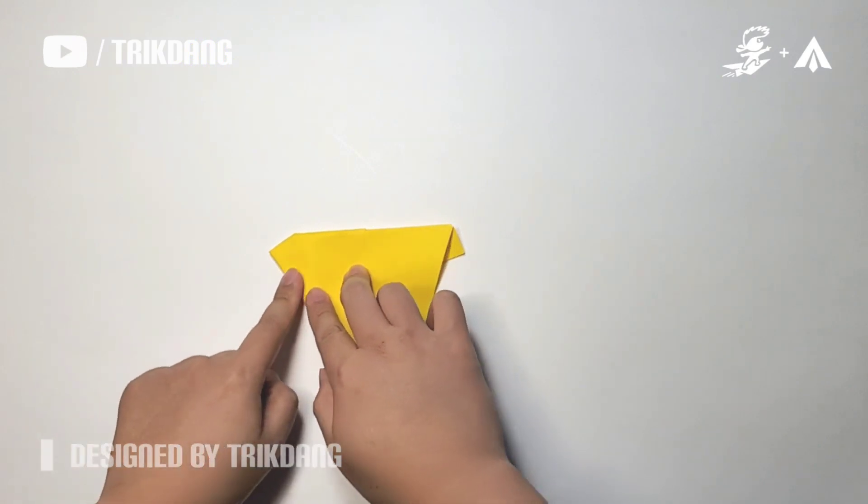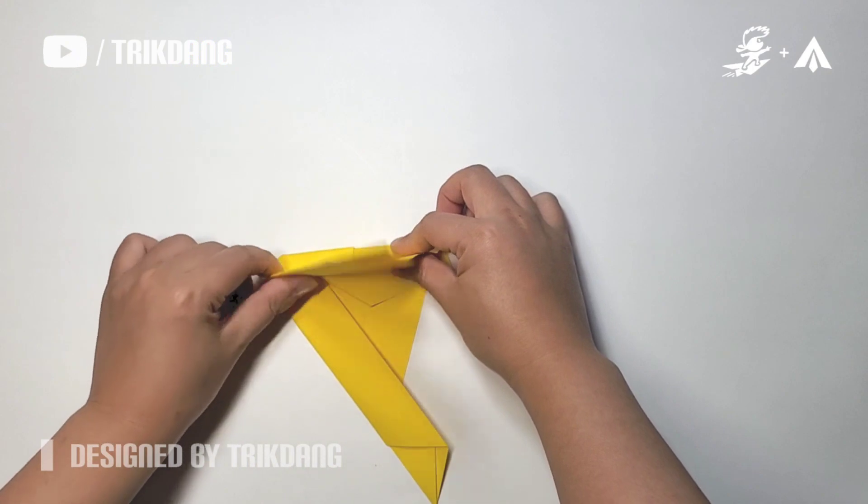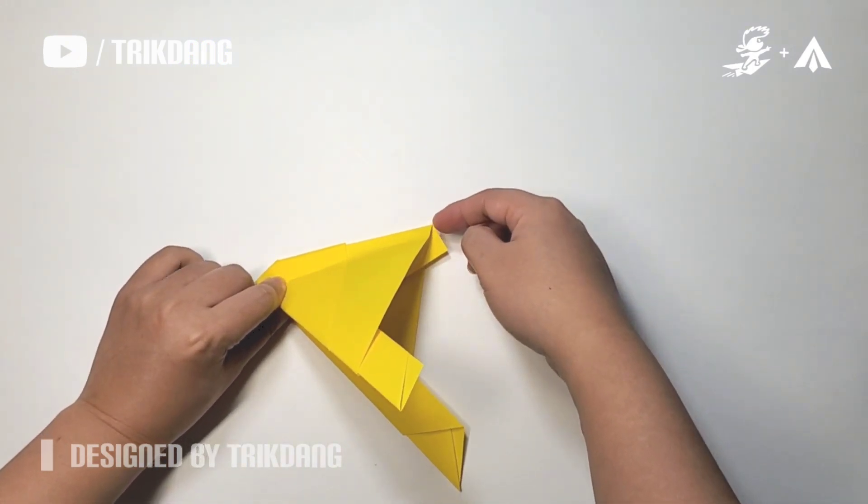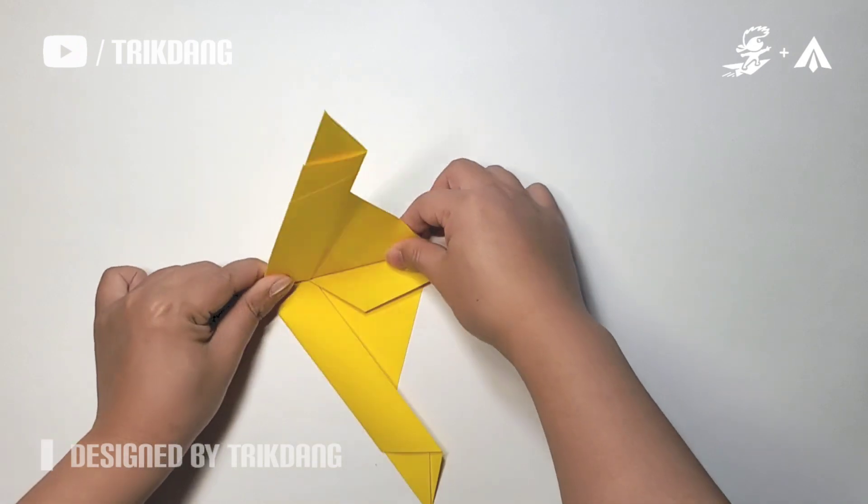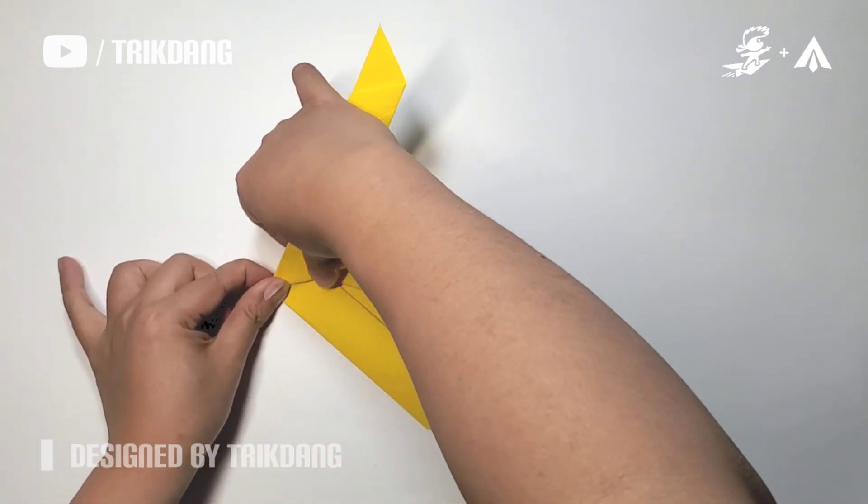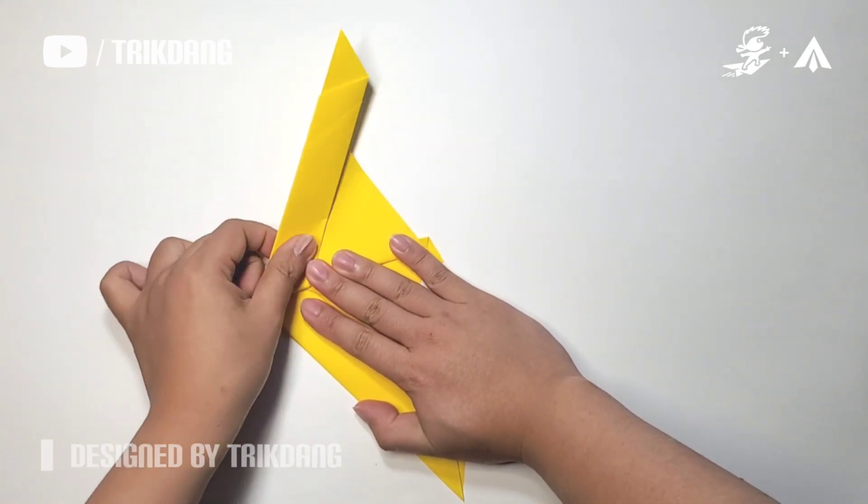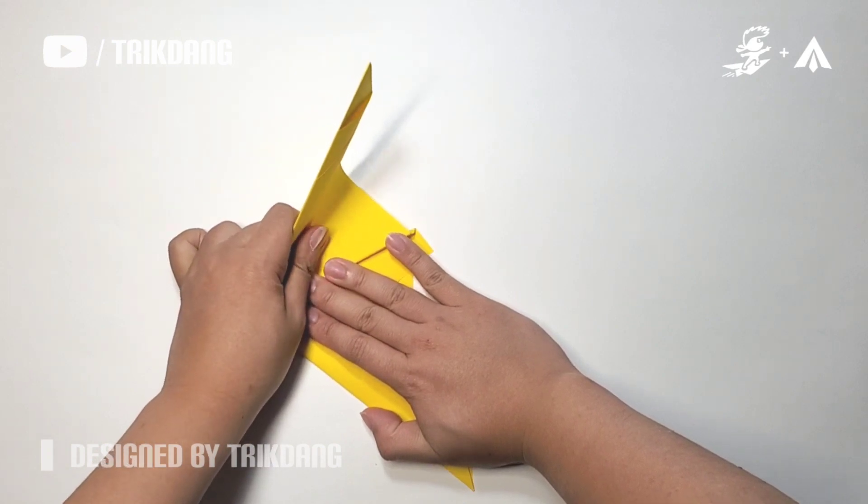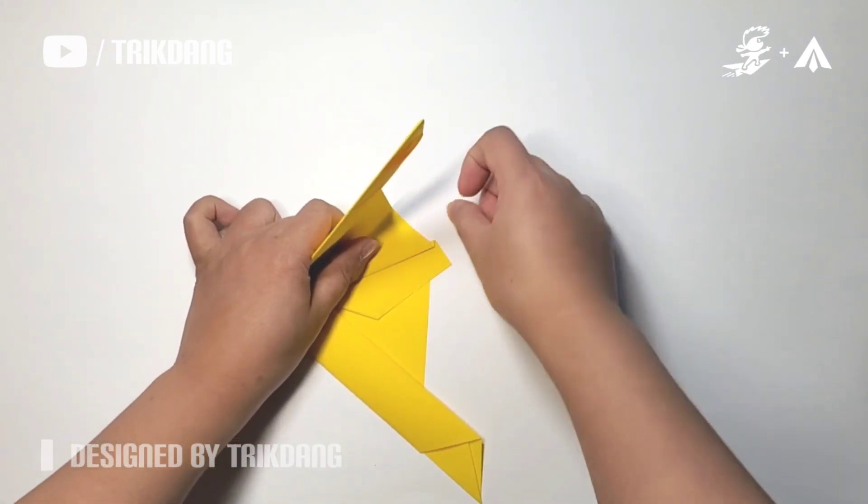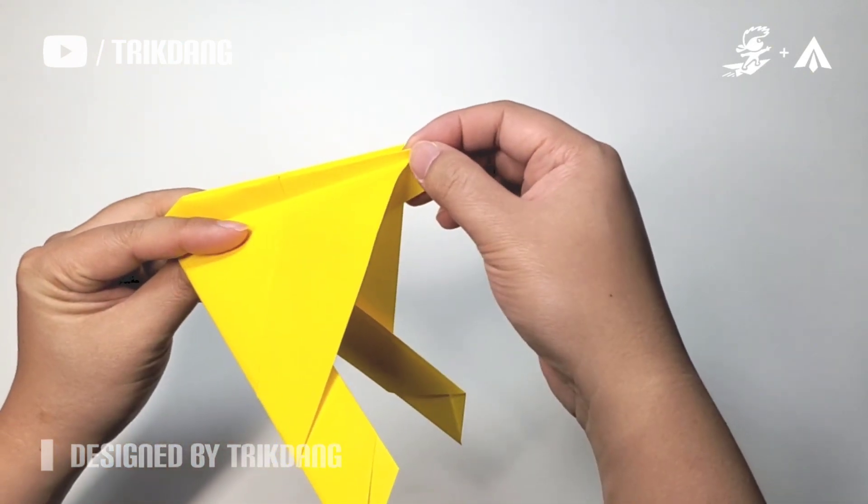On the following step, just fold this part of the wings up to create the first wing. You can fold it straight here and leave a distance about a quarter of an inch. Let's move forward. That's fine if you fold it straight to this corner too.